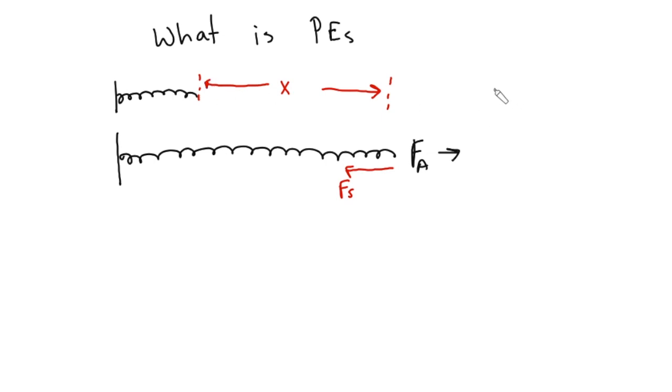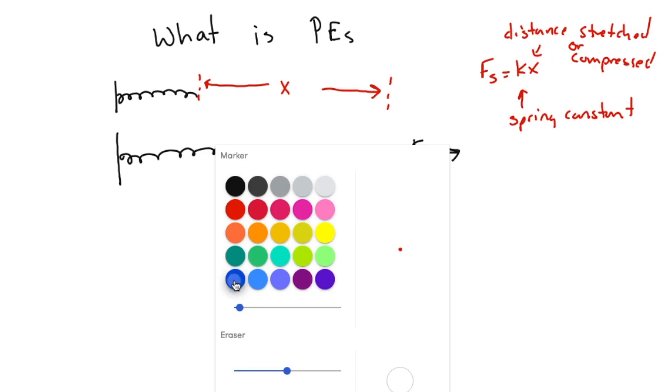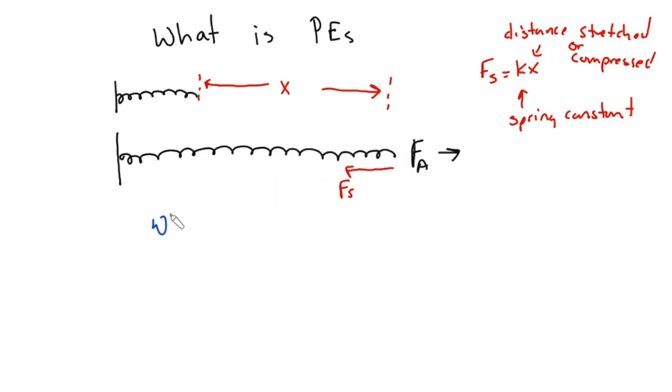And we looked at this relationship of Hooke's Law and we said that Fs equals Kx, where K is the spring constant and X is the distance stretched or compressed. So this is a formula for the relationships of Hooke's Law, but it turns out when I stretch a spring or compress it, when I X a spring, stretch or compress, it gains potential energy.